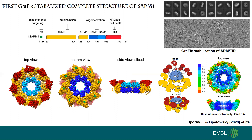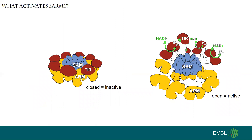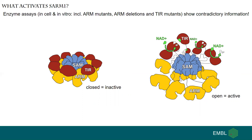We wanted to go further and understand better what activates SARM1. We have a closed conformation, which we suppose to be inactive, and an open active conformation, which by dimerization of the TIR domains can trigger NAD destruction. From enzymatic assays in cell and in vitro — including several non-functional mutants, ARM mutants, ARM deletion, and TIR mutants — we received contradictory information: the closed conformation is found predominantly in the cell, so SARM1 is inactive in cell, while in vitro we found very active SARM1.